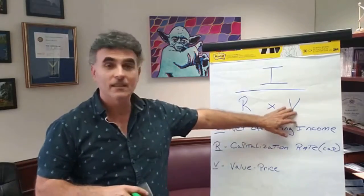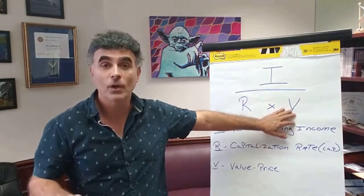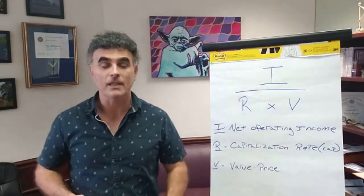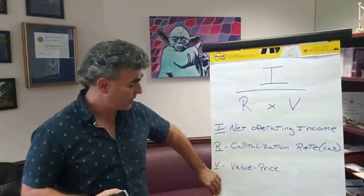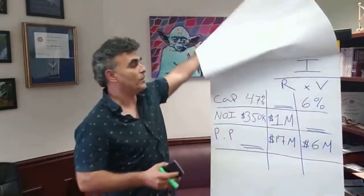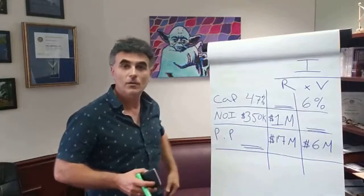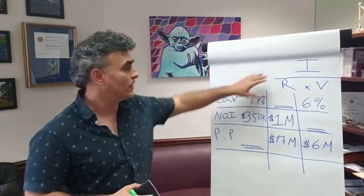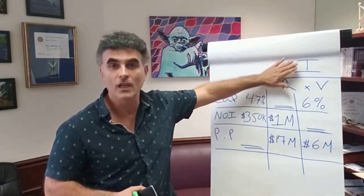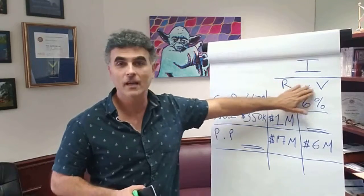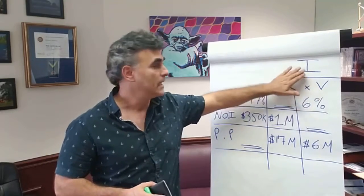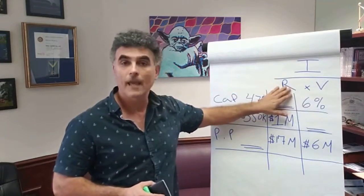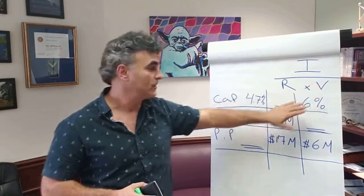The next value is V, which stands for value — the purchase price. What exactly is the purchase price of the property? Now I've got a couple of equations to really solidify exactly what I'm talking about. Here we have the equation: I over R times V — net operating income over cap rate times the purchase price.